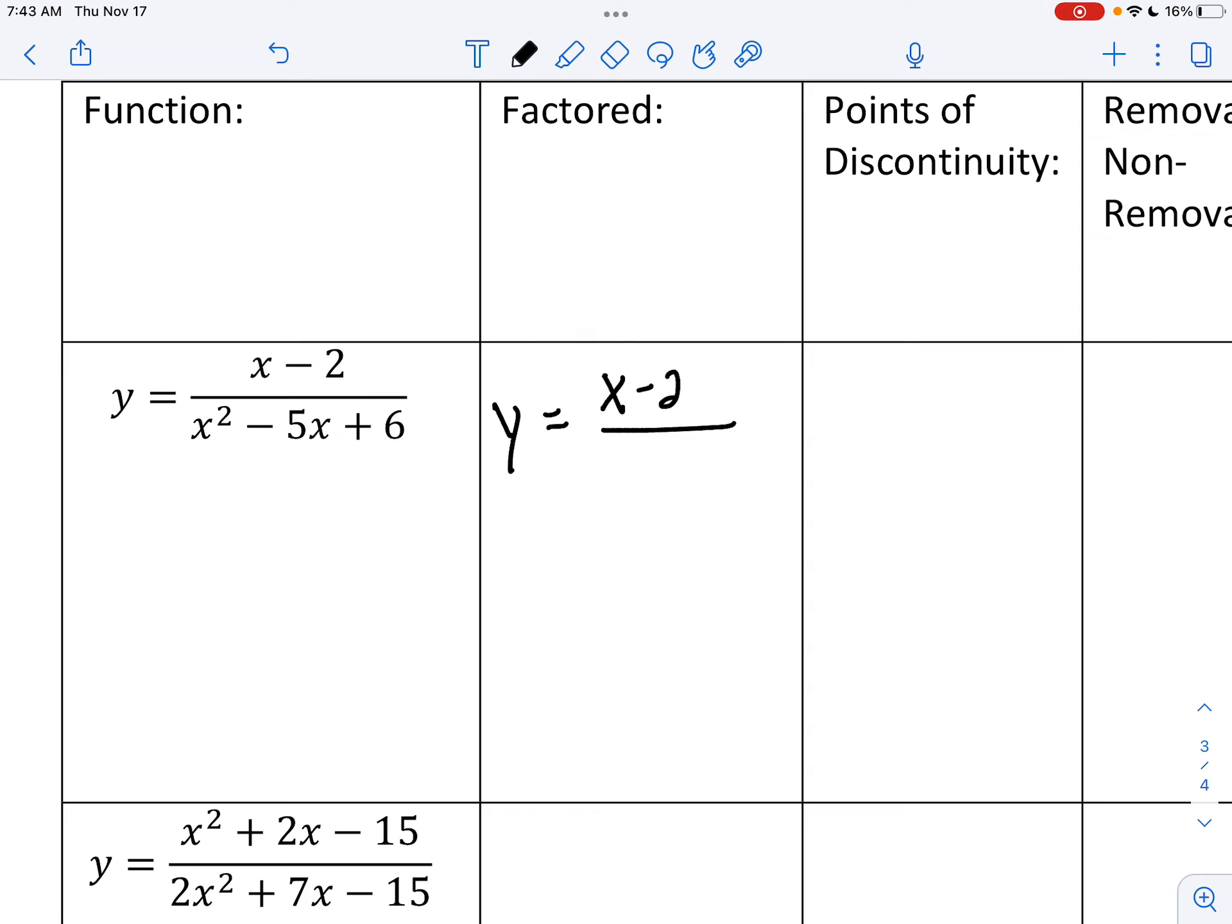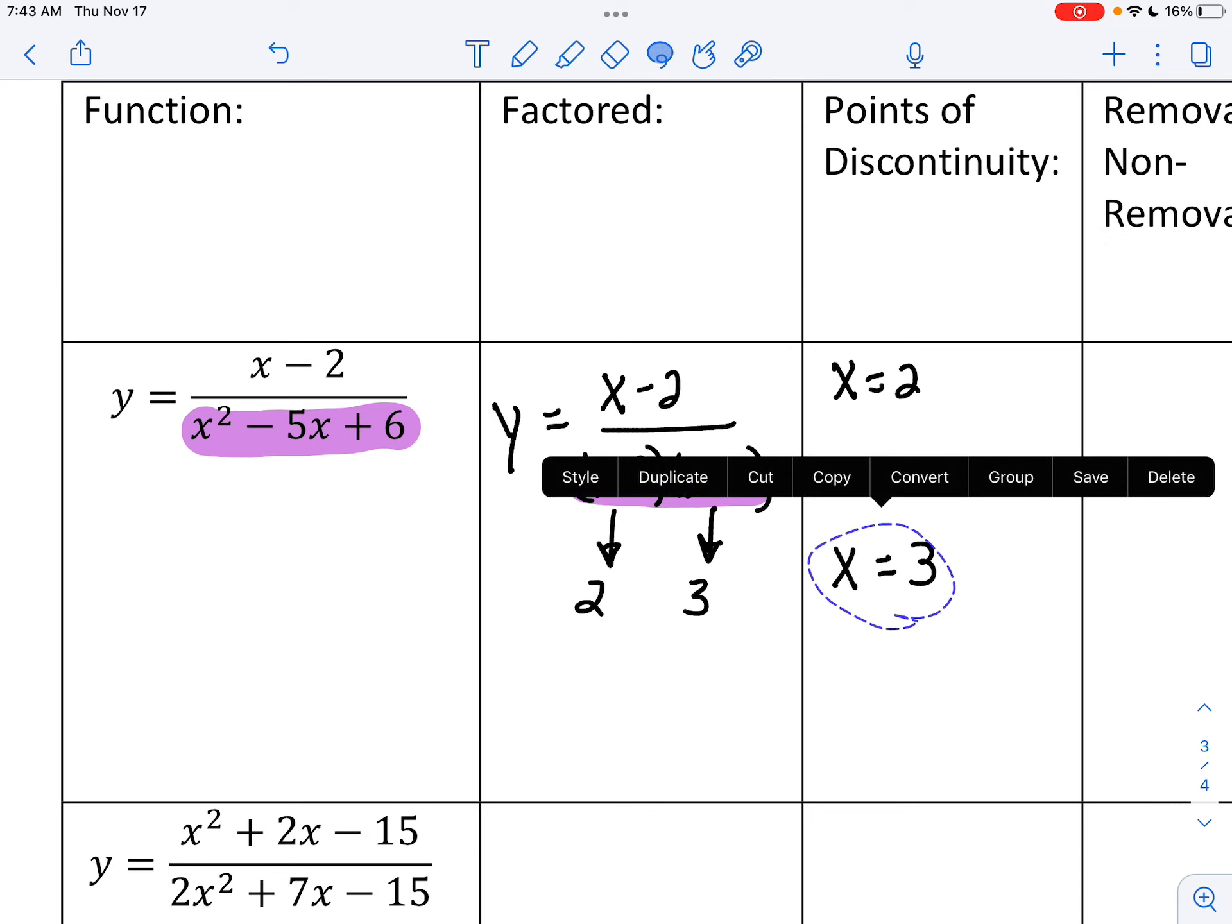Does the denominator factor? Yes. Can you factor that for me? x minus 2 and x minus 3. Excellent. Very good factoring skills. Now, the points of discontinuity are the points that would make the denominator 0. What would make this 0? 2. And what would make this one 0? 3. Very good. So x equals 2 and x equals 3 are points of discontinuity.